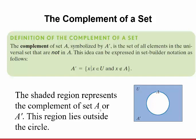Now let's talk about the complement of a set. The complement of set A is symbolized as A with a little dash — I'll call that A prime, or A complement. It's the set of all elements in the universal set that are not in A. In set builder notation: A complement is the set of X such that X is an element of the universal set and X is not an element of A. The shaded region outside the circle of A represents the complement of set A.